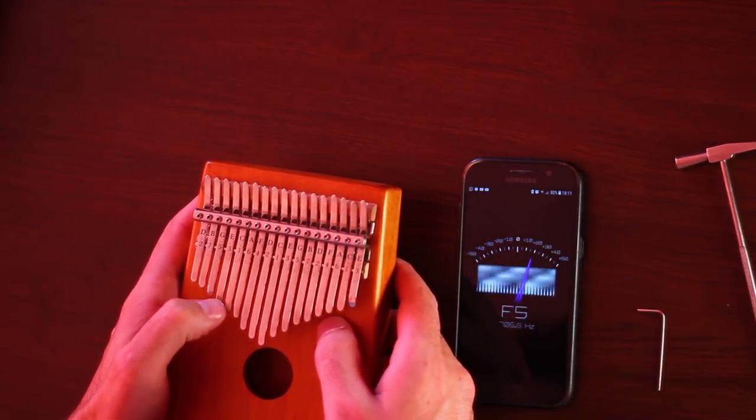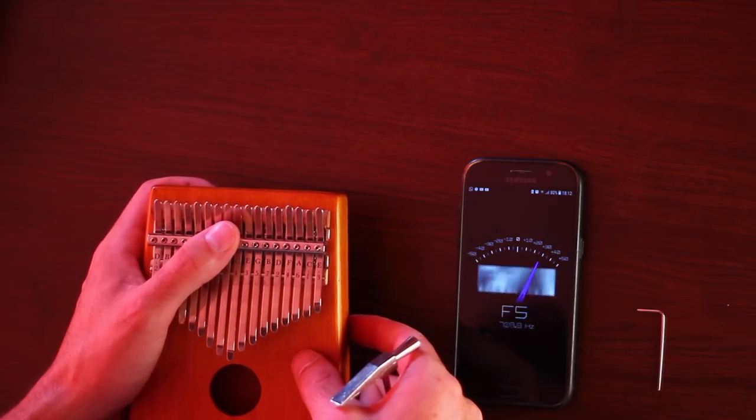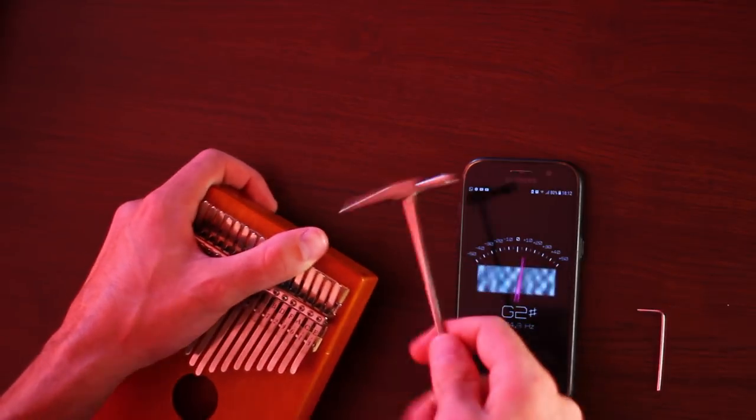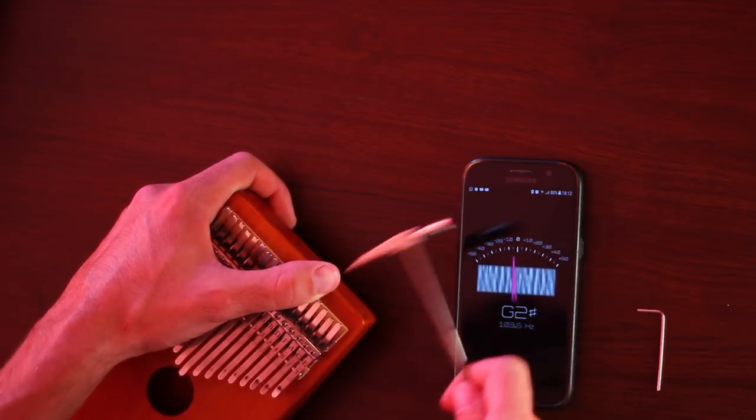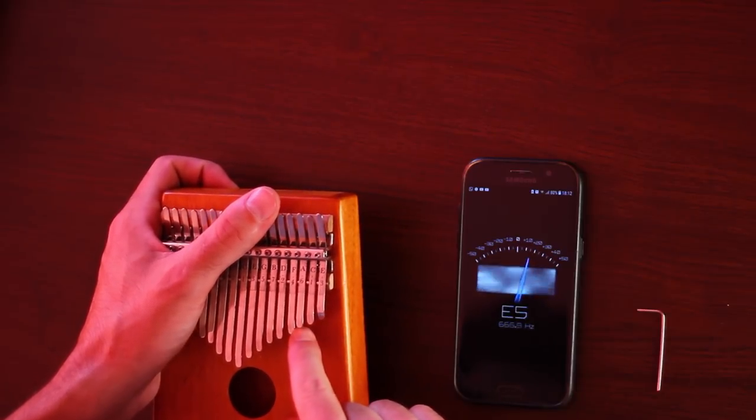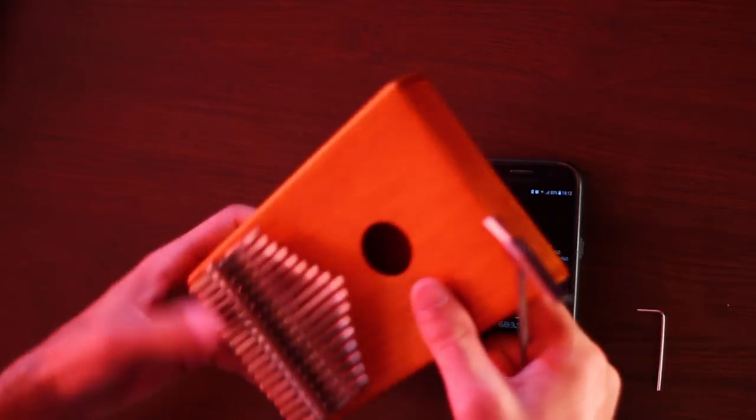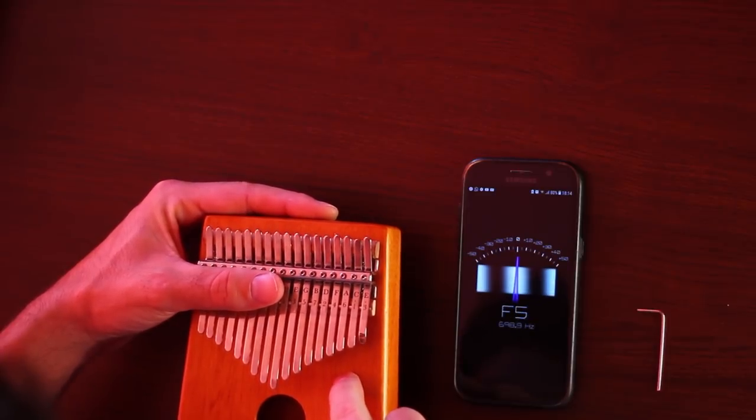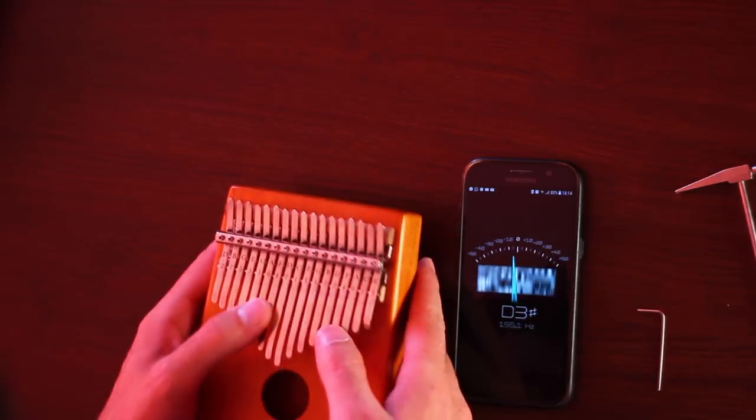F. All right. The F is way too high. We need the tone to be lower. So we have to hit from this side right here. I'm putting my thumb and start hitting. Let's see. Whoa. I did it way too much. From the other side. We got it.